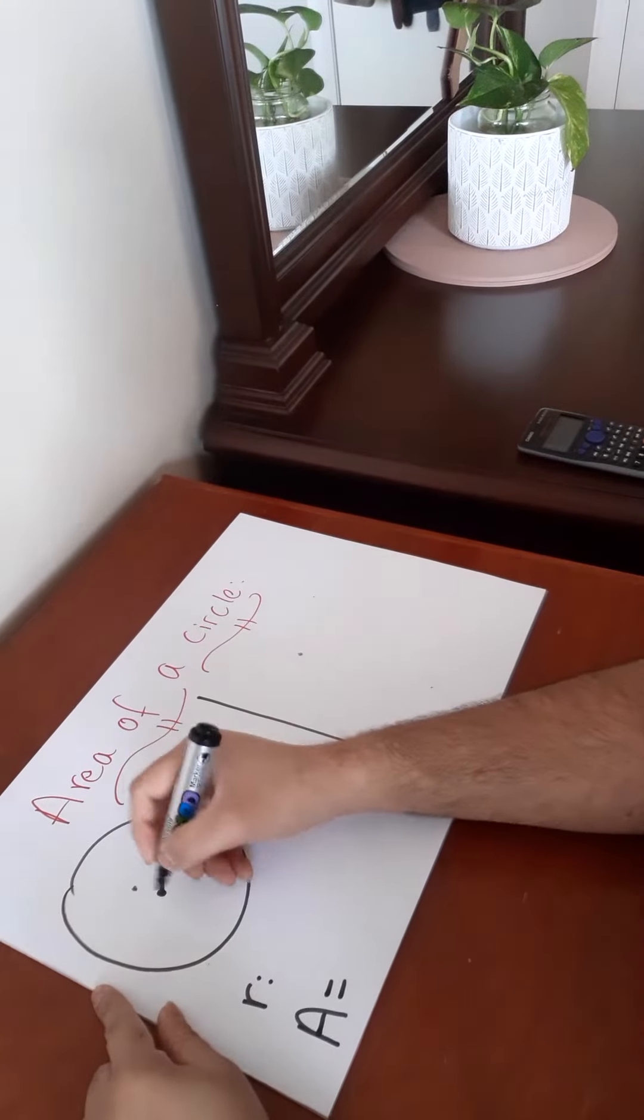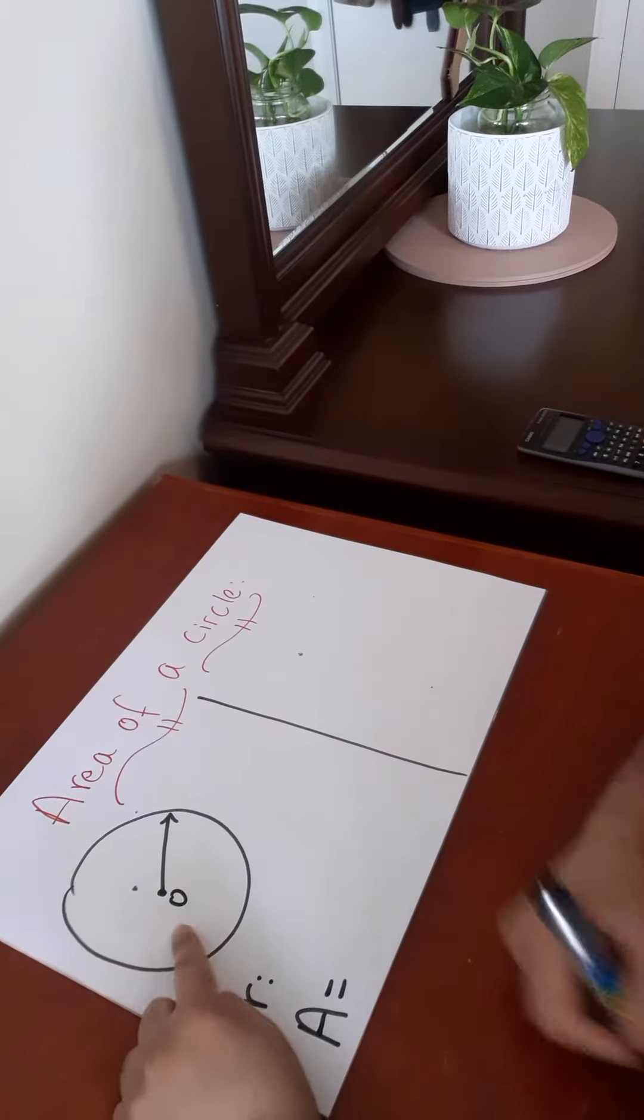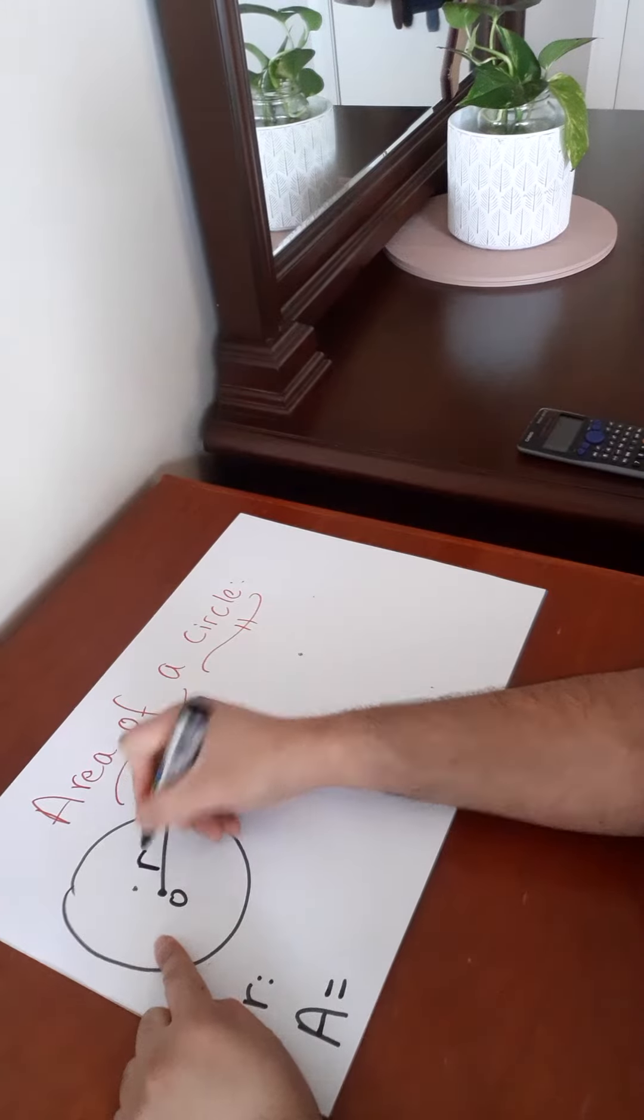So I've drawn a circle here. Now this is a center, capital O. The distance from the center to the edge is called the radius, R.